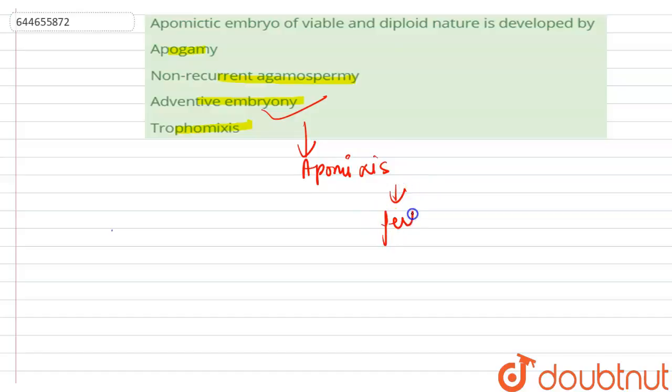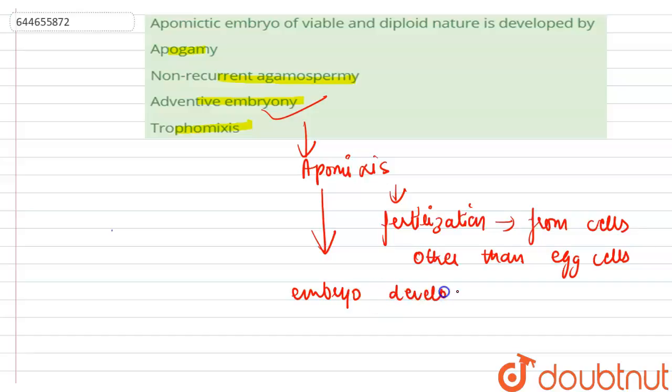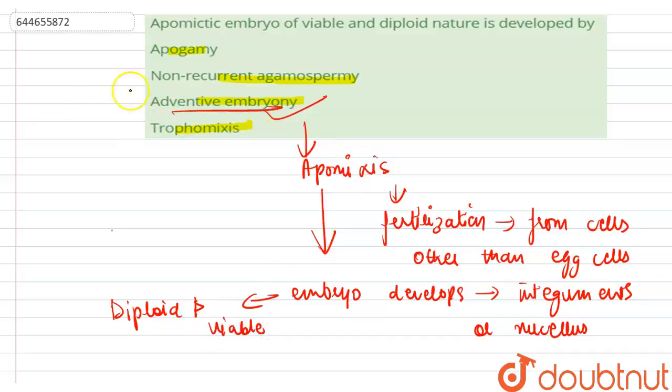It is the method of fertilization or fusion from cells other than egg cells. Adventive embryony is possible when the embryo develops from integuments or nucellus, and the embryo developed is diploid and viable in nature. The correct option for this question is adventive embryony.